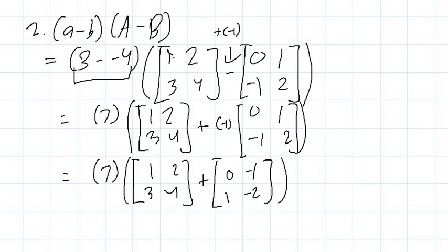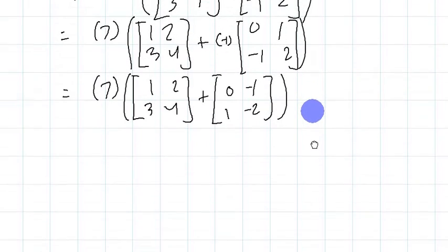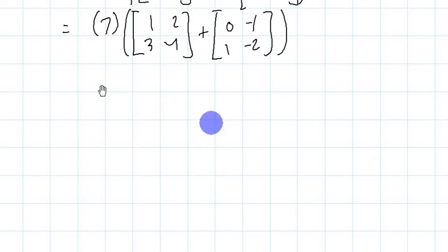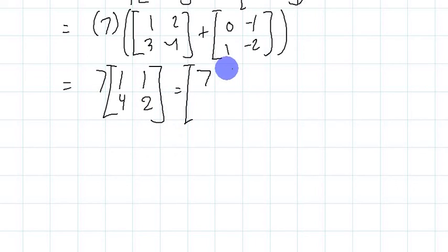Therefore, let's bring that down. We're now going to have 7 multiplied to the matrix 1, 1, 4, 2, which gives us the final matrix of 7, 7, 28, 14.